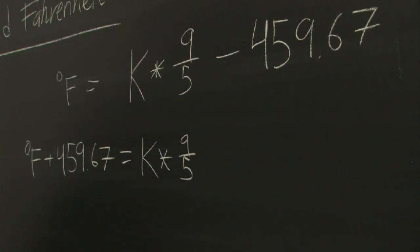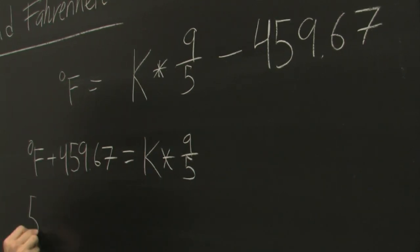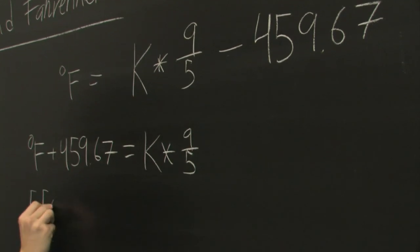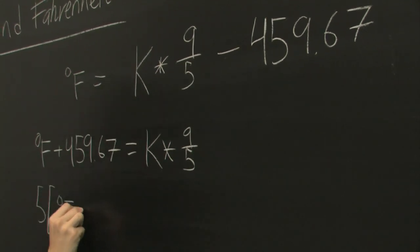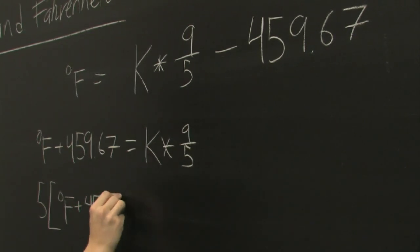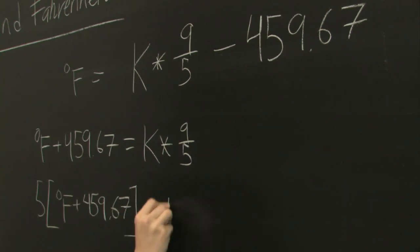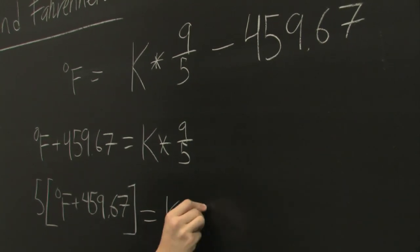Okay, then we'll multiply both sides of the equation by 5. We get 5 times degrees Fahrenheit plus our mysterious quantity 459.67 equals Kelvin times 9.